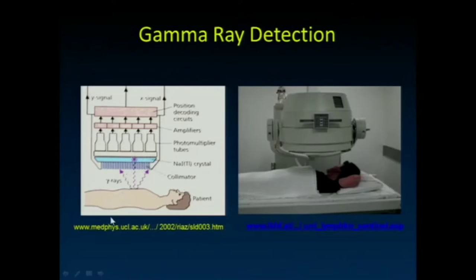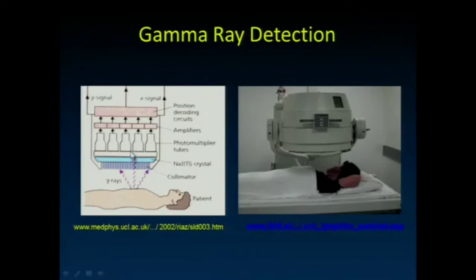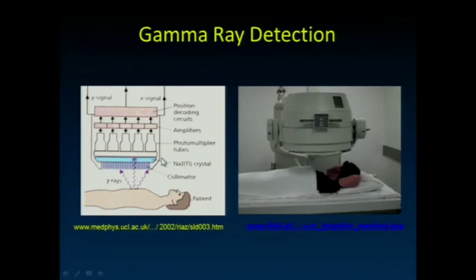Events occur far enough apart in space and time that I can detect each one individually. By detecting the amount of light seen by adjacent photomultiplier tubes, I can interpolate where the event occurred. The tube closest to the event sees the majority of the light; surrounding tubes see smaller percentages. The sum of the light detected by all of them tells me the energy of the interaction. So in nuclear medicine imaging, I retain time, position, and energy information.